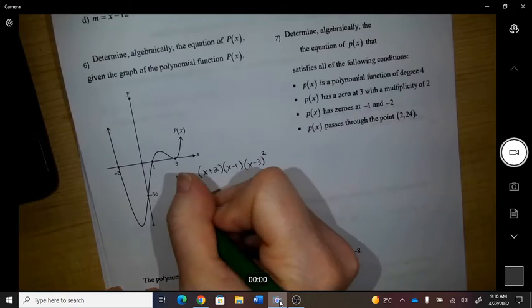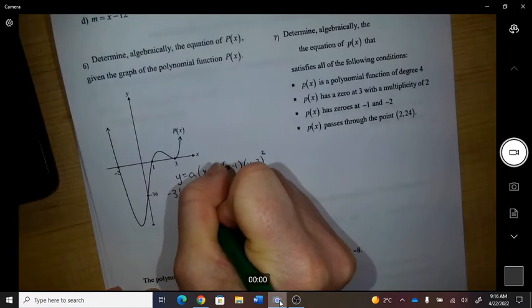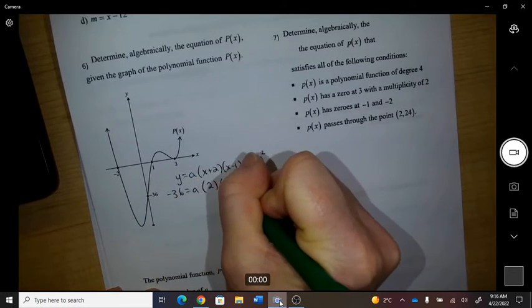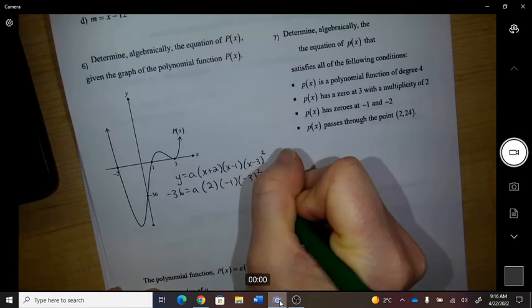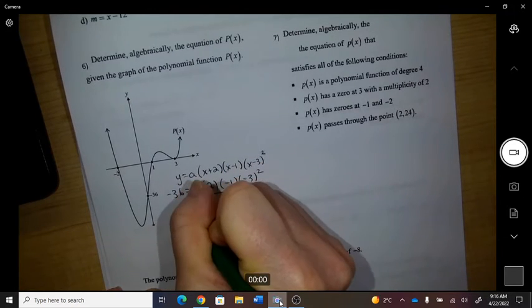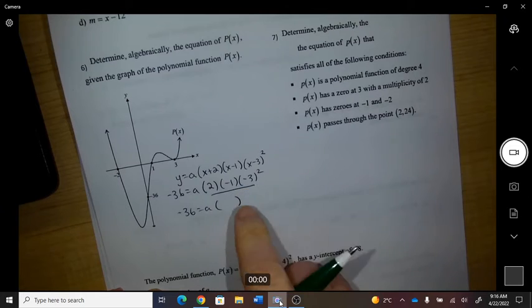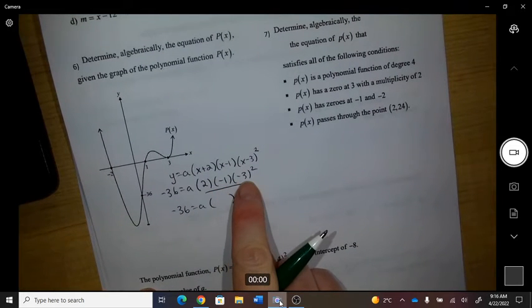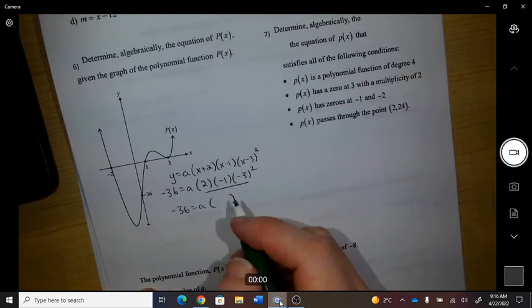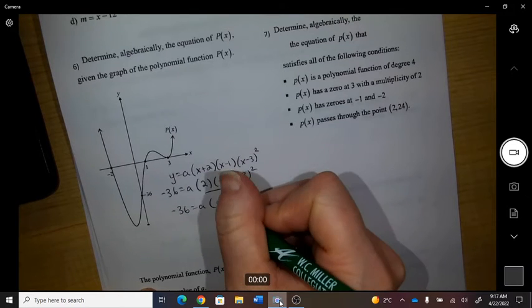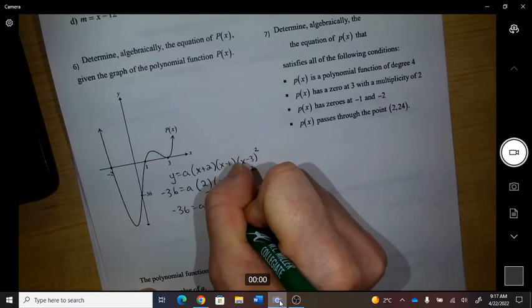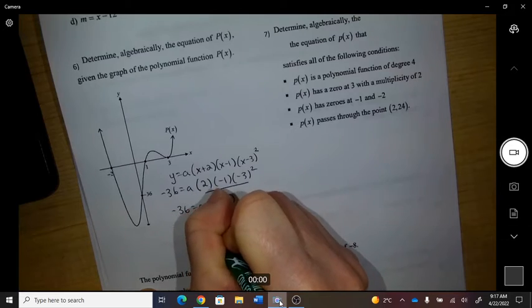I want the y to be negative 36 when x is 0. So all of this multiplies to 2, negative 1, negative 1 and positive 9, so that is negative 18. Therefore a equals 2.